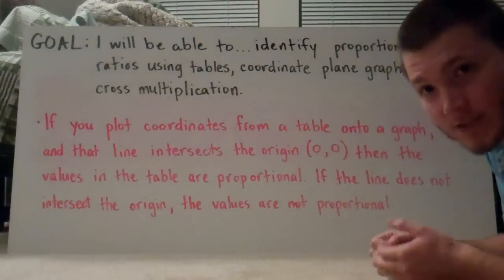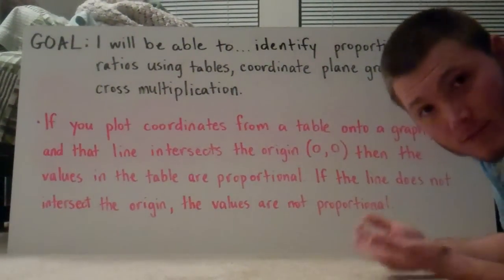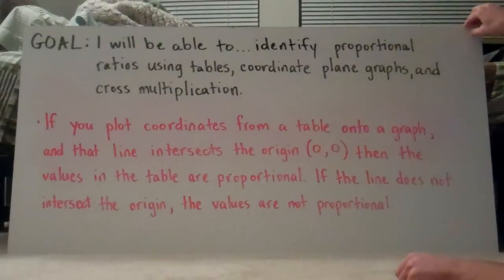So if it intersects 0,0 they're proportional. If it doesn't, they're not proportional.